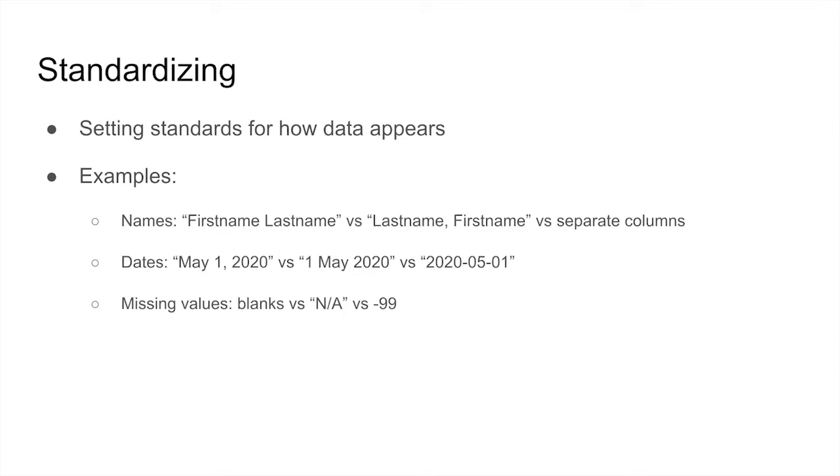Similar to removing extraneous punctuation marks or text characters, sometimes the format of the values in a column is inconsistent or inappropriate to a particular type of analysis. The values in a column should be standardized, so they are all formatted the same way and use a format that works for the software application.